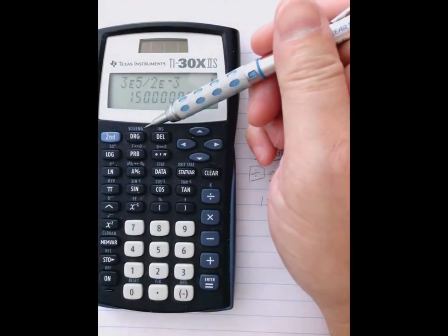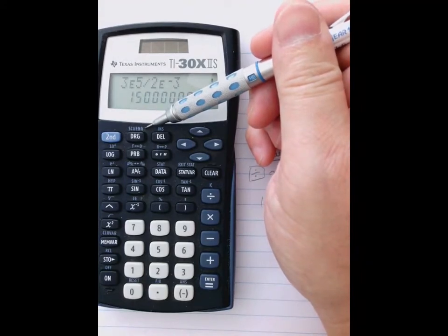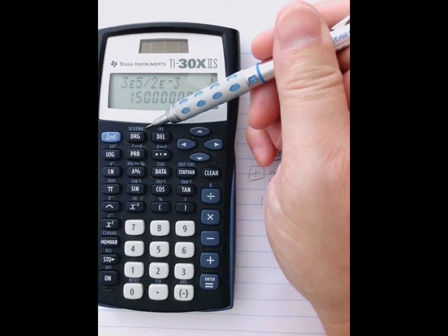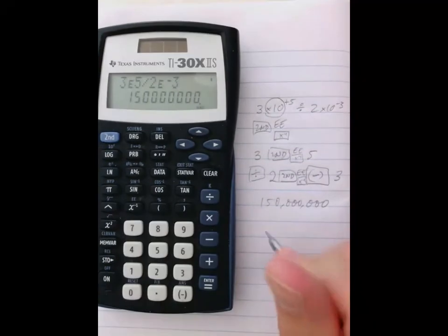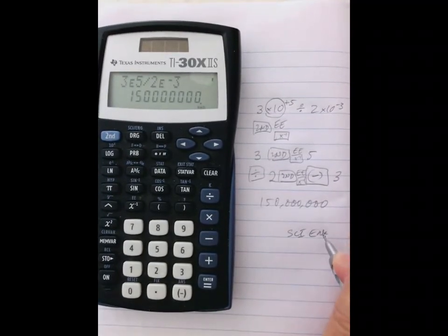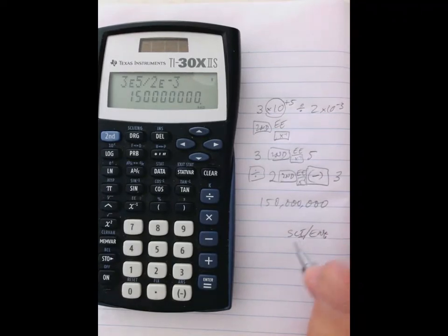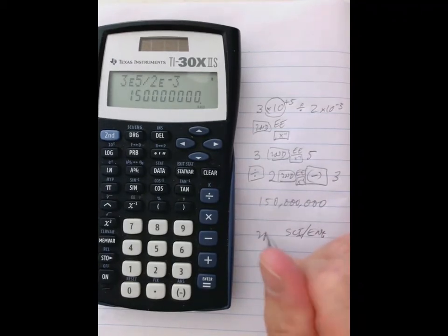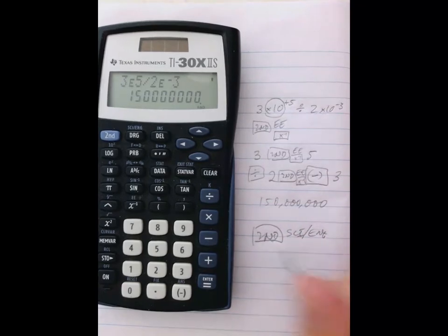Here's the place where you force the calculator to go scientific notation. This key that says scientific or engineering, SCI or ENG with a slash. And again, because it's above the key, you need to hit second and then the key is the DRG key.